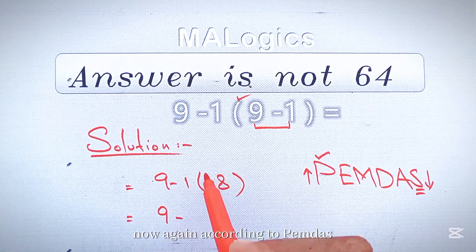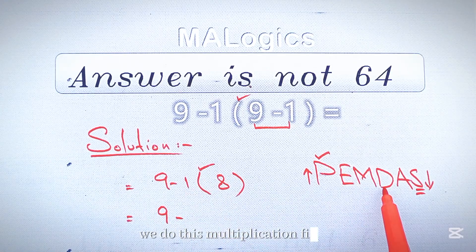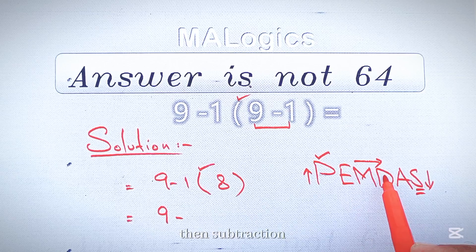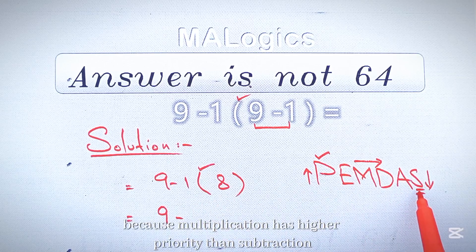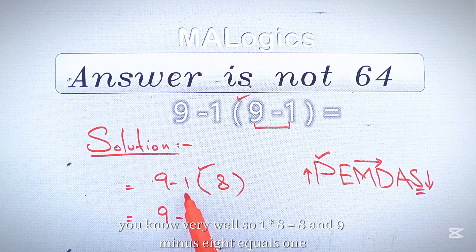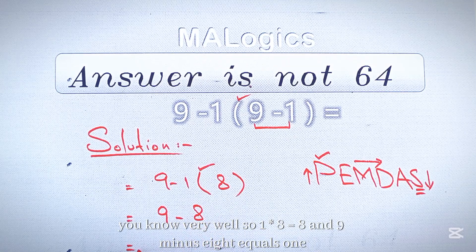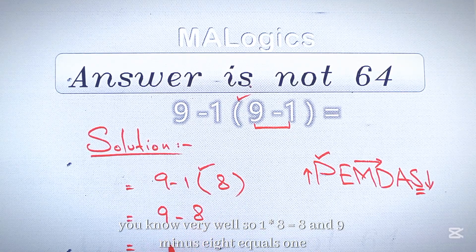In the next step now again, according to PEMDAS, we do this multiplication first then subtraction. Because multiplication has higher priority than subtraction, you know very well. So 1 times 8 equals 8, and 9 minus 8 equals 1.